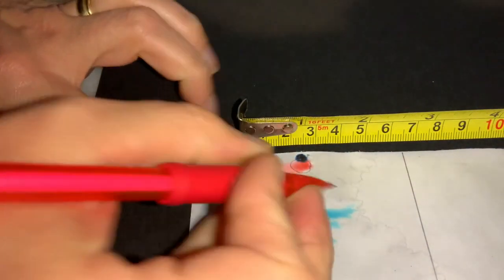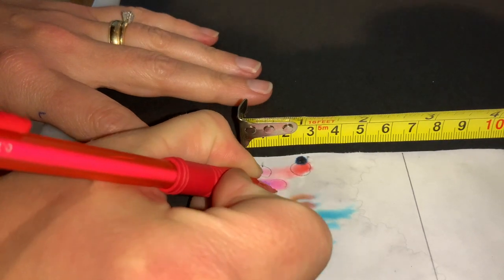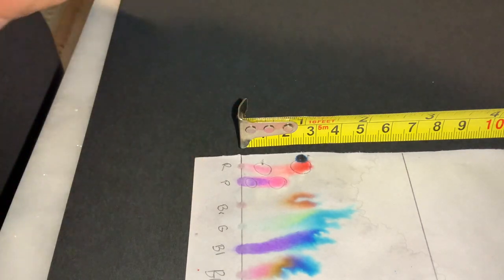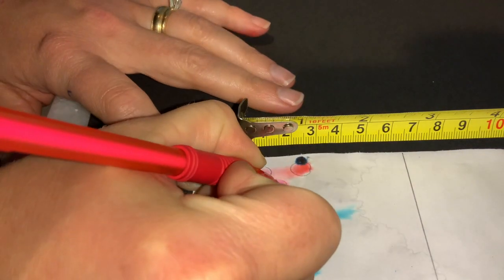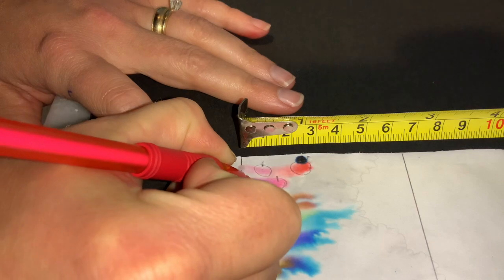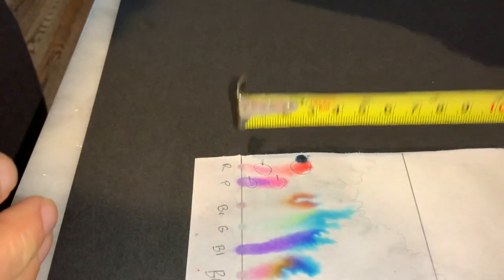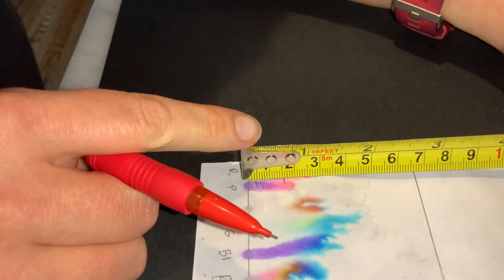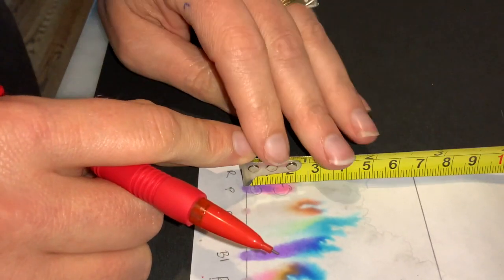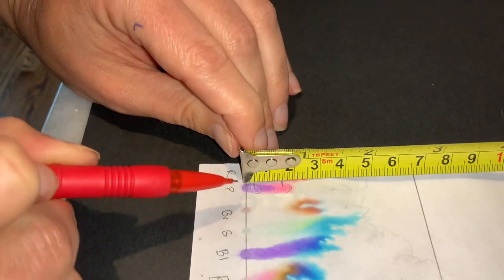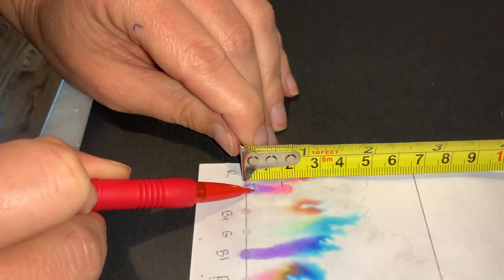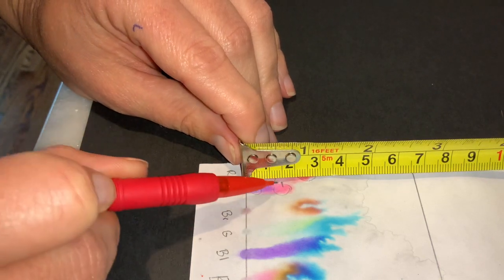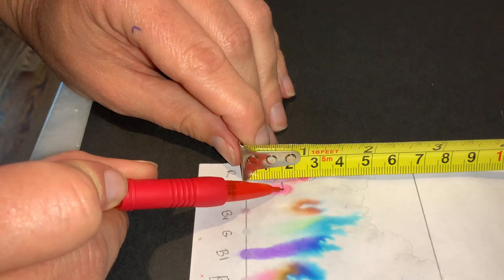Next, we'll look at our purple. So our purple has got, again, two different colors here. So again, you want to measure the distance from your line to this purple spot, and then the distance to this spot.